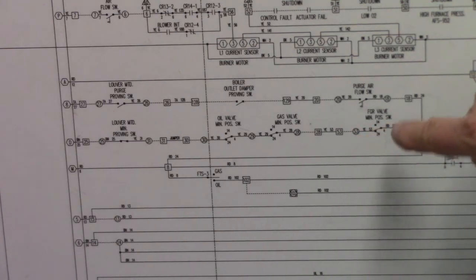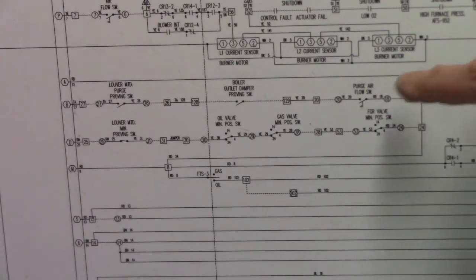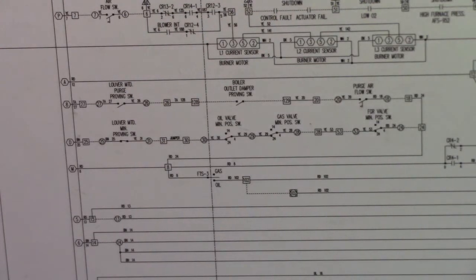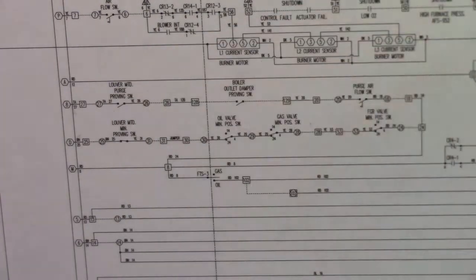So if we go out to the boiler, all we need to do is look at these three components to figure out why we're not going into purge. We don't have to worry about anything else on the boiler. It is one of these three components.